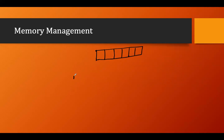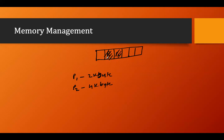In contiguous memory allocation, let's say we have program P1 with a size of 2KB and program P2 with a size of 4KB. We allocate them into contiguous memory — P1 is allocated here and P2 is allocated here, each stored in a contiguous block of memory.